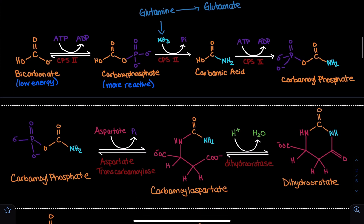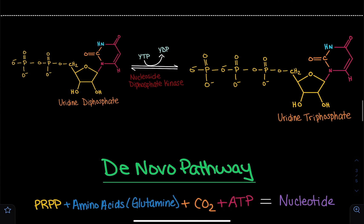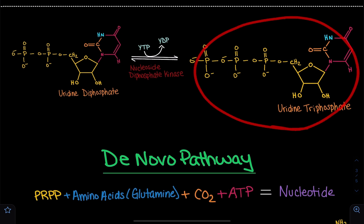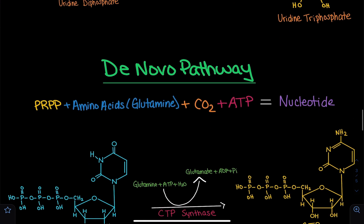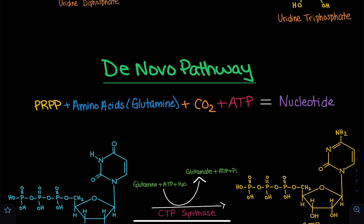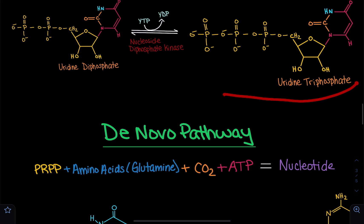Remember that we go over the entire pathway, and at the end of the pathway, we end up with UTP. Here we're going to utilize this UTP molecule to generate CTP. A quick overview of the de novo pathway: we use PRPP and amino acids such as glutamine and aspartate, CO2 which acts as bicarbonate when it combines with water, and ATP to create a nucleotide — in this case, UTP.